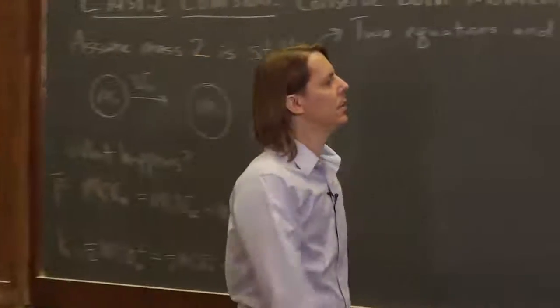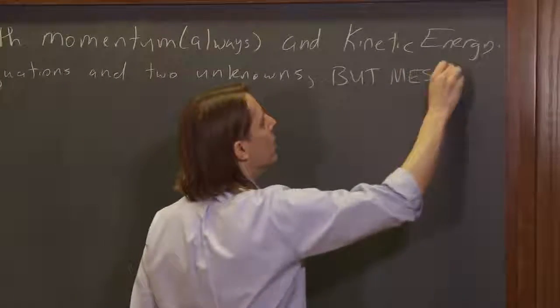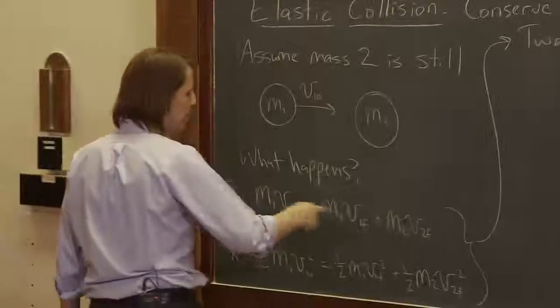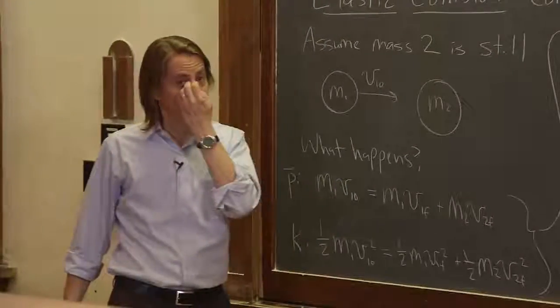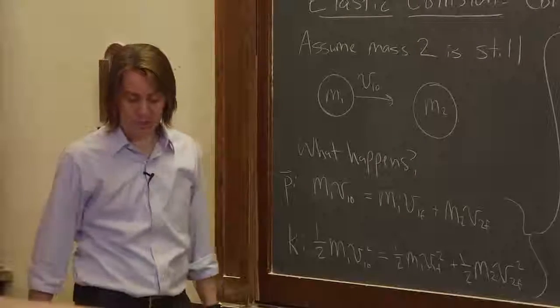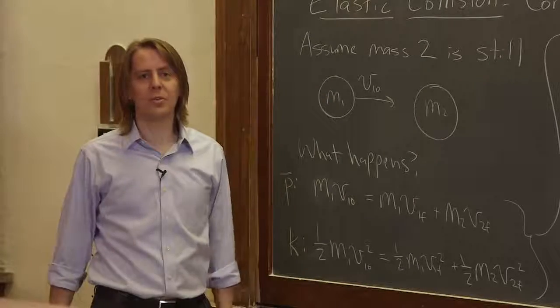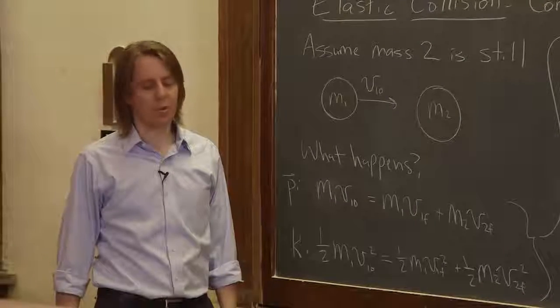And the reason it's messy is because here, your velocities are squared, and here, your velocities aren't squared. Things that are squared and added are bad, usually, when it comes to algebra. So what do we do when it's messy? Do we go for physical insight, or do we go for a mathematical trick?